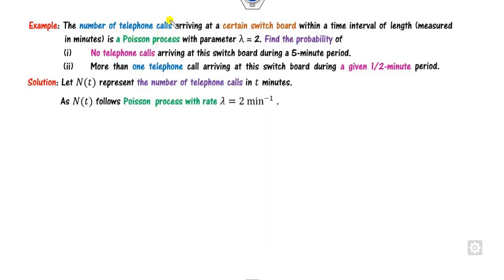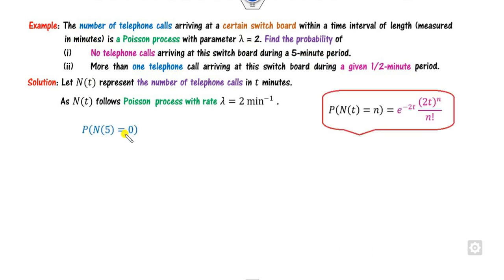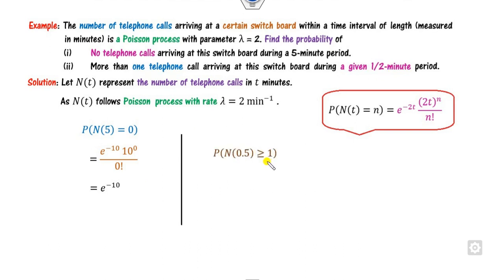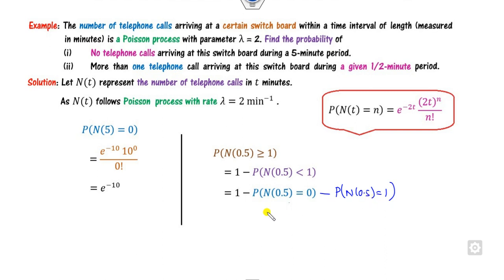Example 7: Consider N(t) representing the number of telephone calls, following a Poisson process. Part 1: No telephone call during the first 5 minutes — t=5, n=0, substitute into the Poisson formula. Part 2: More than 1 call in half a minute (t=0.5) — P(N(0.5) > 1) = 1 - P(N(0.5) ≤ 1), which includes the n=0 and n=1 cases. Substitute to get the answer.